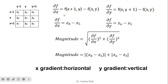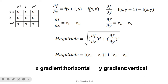As explained in my previous video, we use partial derivatives for edge detection. The partial derivative with respect to x is f(x+1, y) minus f(x, y), where y is constant. Similarly, the partial derivative with respect to y is f(x, y+1) minus f(x, y), where x is constant.